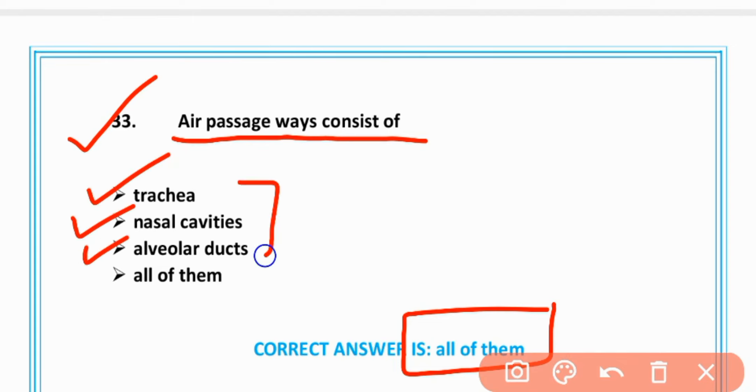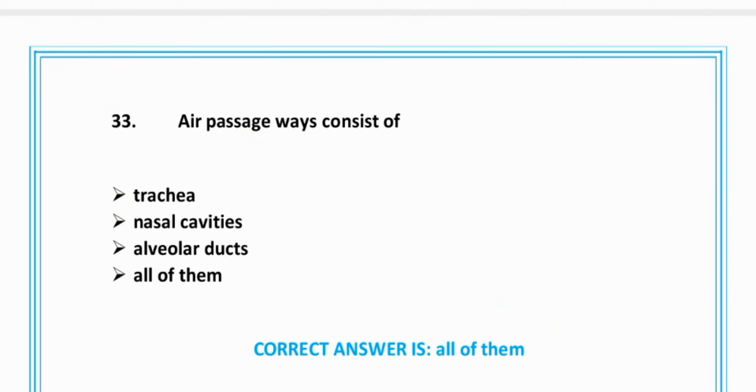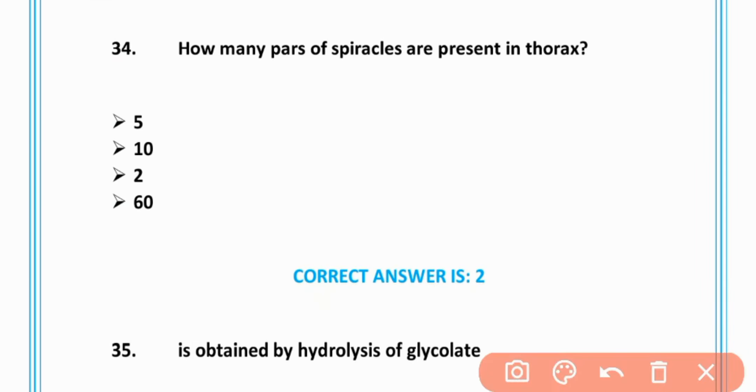MCQ number 34: How many pairs of spiracles are present in thorax? 2, option C is correct.